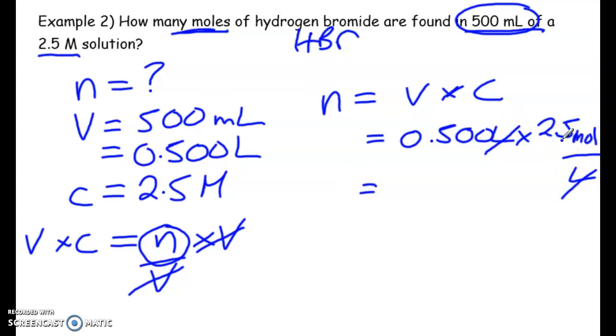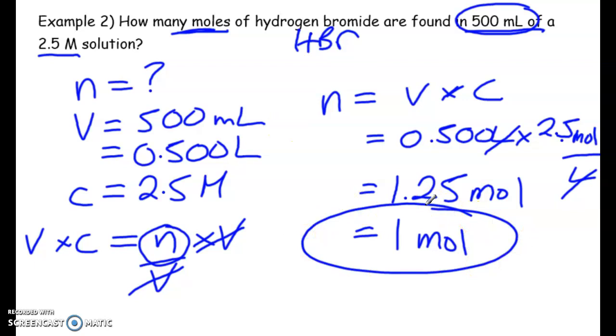So this ends up being, this is a decimal, 0.5 times 2.5. We get 1.25 moles. And actually, we only want one significant digit because of the 500. So this rounds to one mole, which is not really the greatest. But I mean, one sig fig, what are you going to do? So there's our answer.